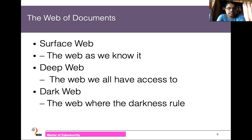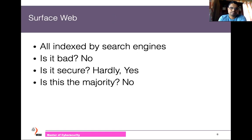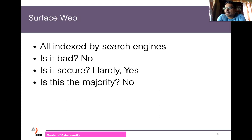When we say web, there are three kinds: the surface web, the deep web, and the dark web. The surface web is the web we can search — it's the web we know, and it is indexed by search engines like Google, Bing, and others. It's usually used for good purposes and is generally secure.